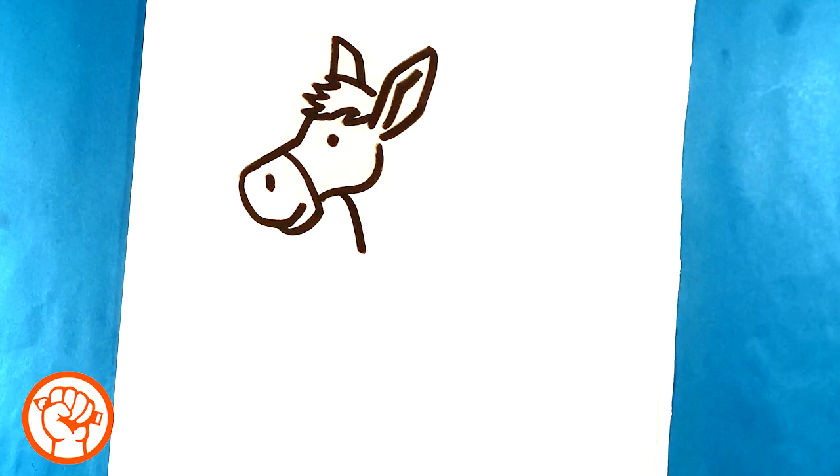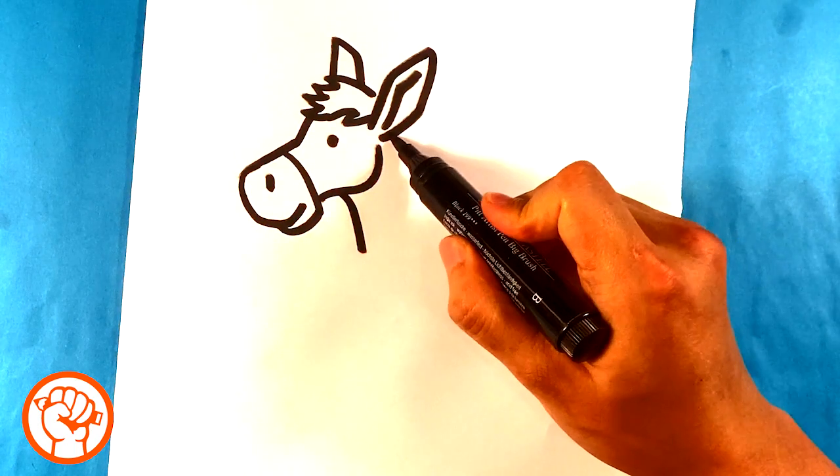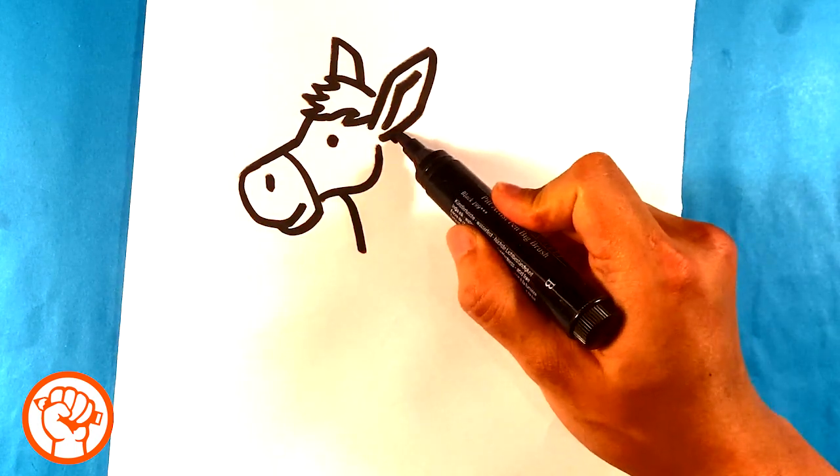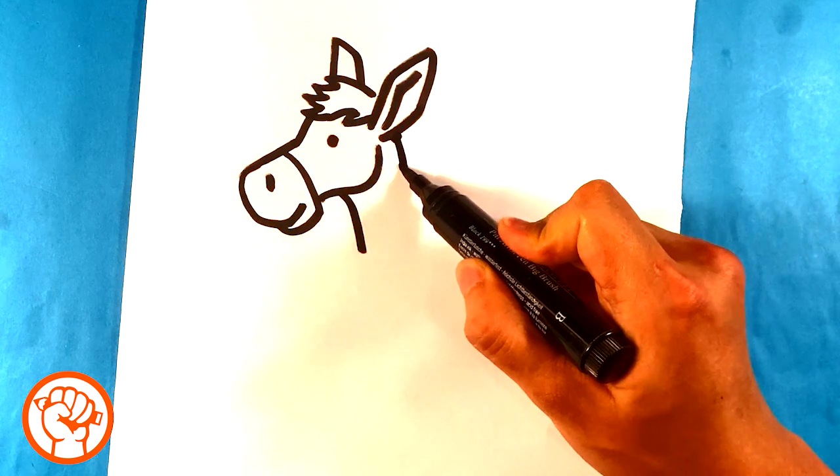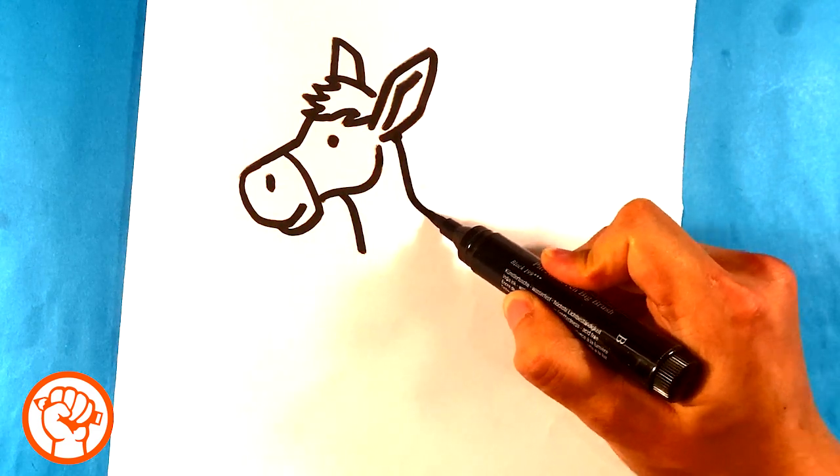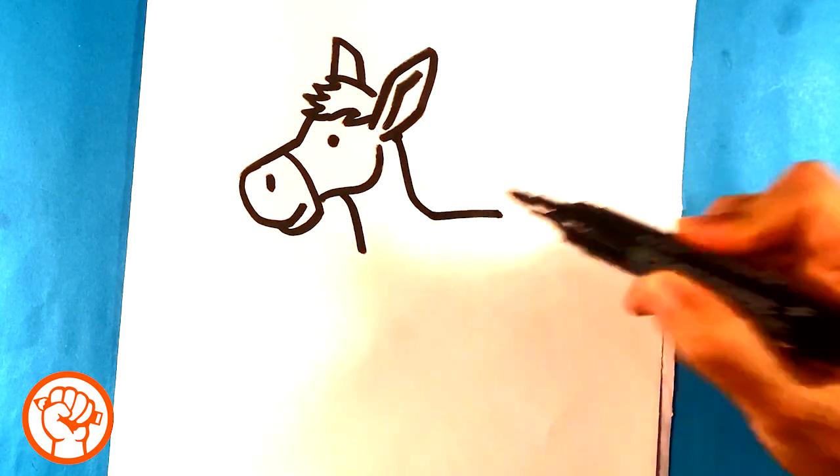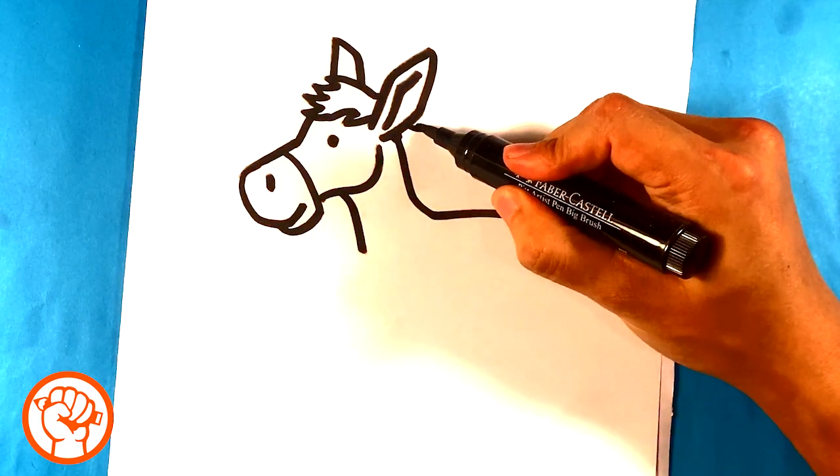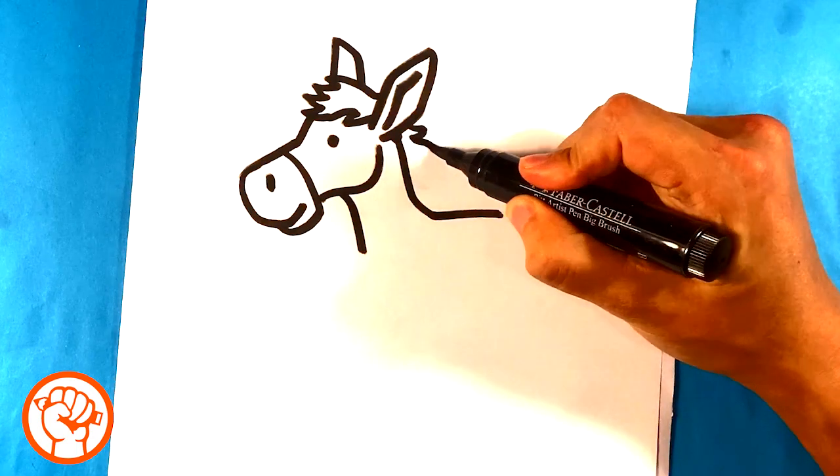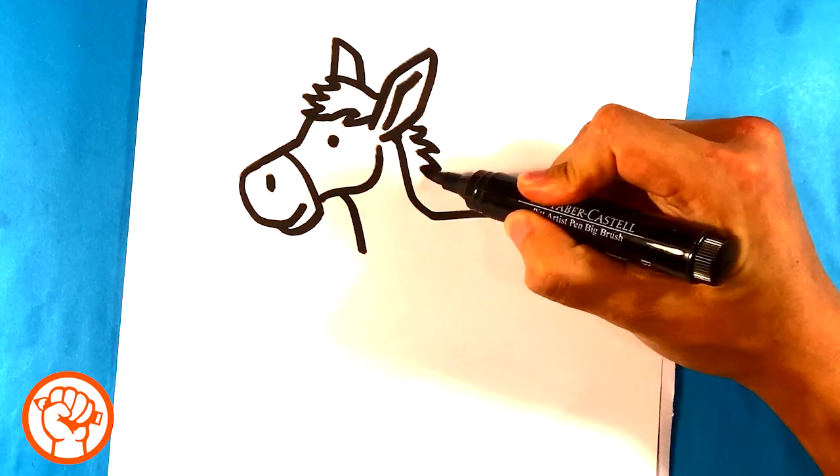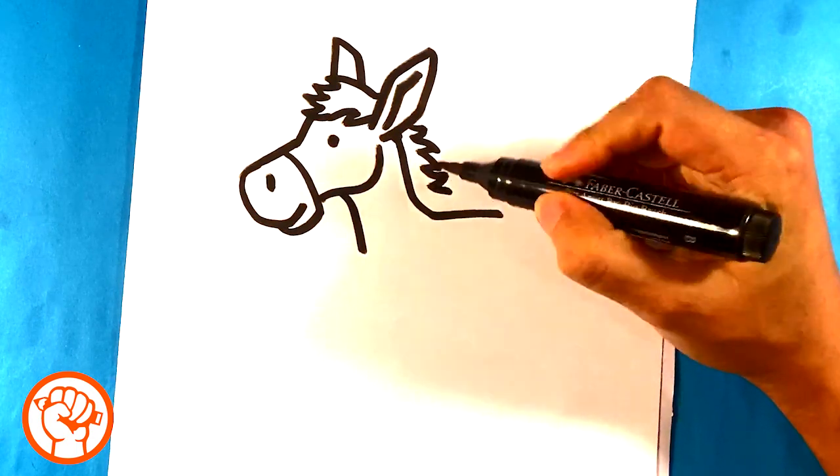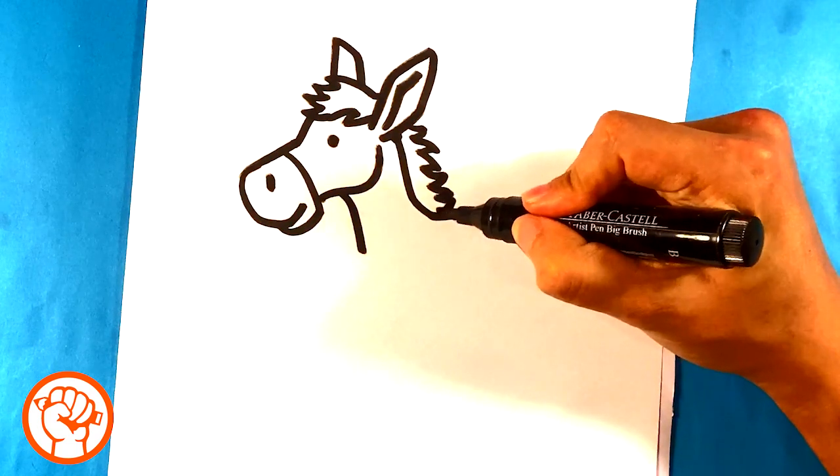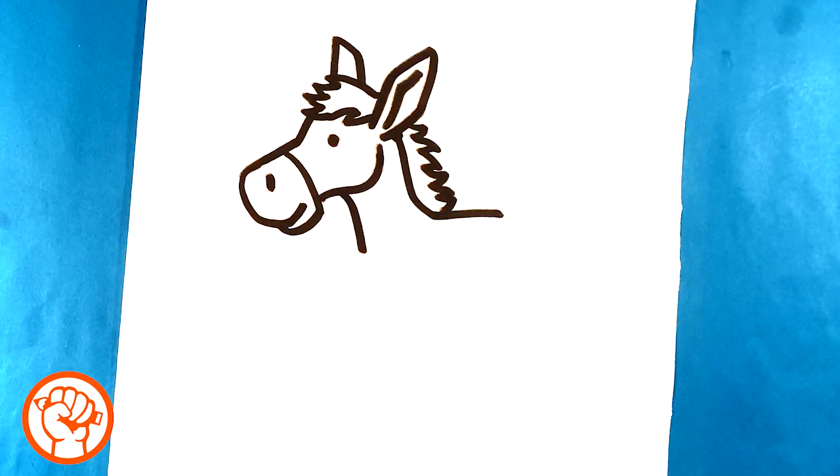I'm going to pull a line right here for the back. Down, out. I'm going to give it a couple of spikes right here going down. And what that is, is obviously it's just hair going along the back.